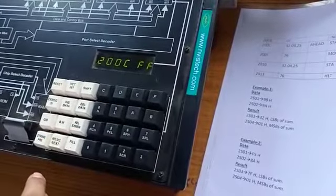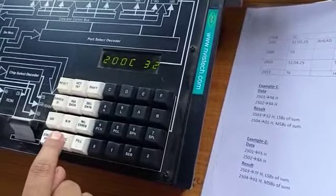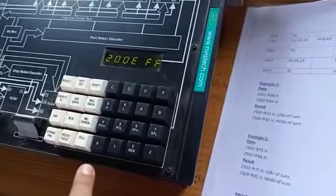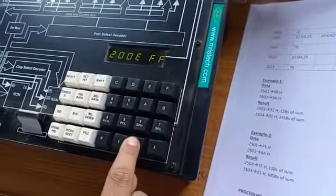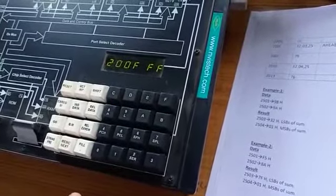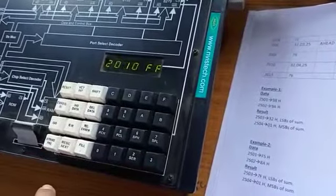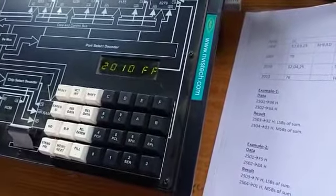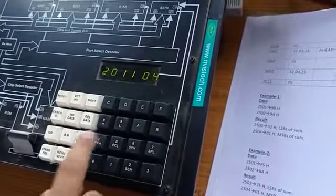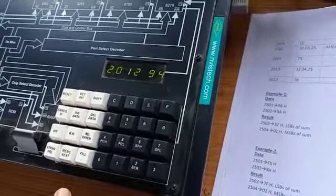Next in 200C, machine code of STA is 32, which is stored in memory location 2503, means in 200D, 03 is stored. Next in 200E, 25 is stored. Next, mnemonics is MOVE A,C, machine code of MOVE A,C is 79 at 200F. Next, STA machine code 32, which is stored in memory location 2504, means 04 is loaded in memory location 2011. Next, 25 is loaded in memory location 2012.